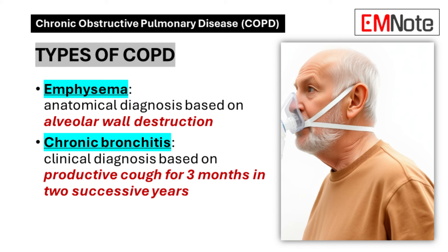COPD encompasses two main subtypes: emphysema and chronic bronchitis. Emphysema is an anatomical diagnosis based on the destruction of alveolar walls, leading to reduced gas exchange and air trapping. Chronic bronchitis, on the other hand, is a clinical diagnosis defined by the presence of a productive cough for at least three months in two consecutive years. While these conditions often coexist, understanding their distinct features is crucial for tailoring treatment approaches.